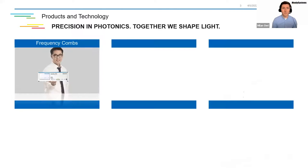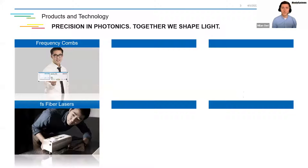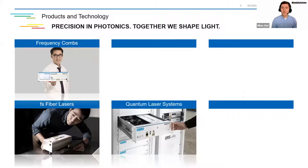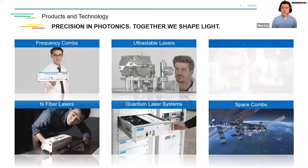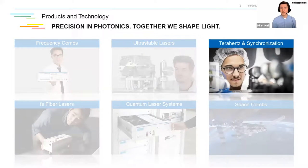Based on these important fundamentals, Menlo Systems has expanded its product portfolio by several more products. Every single product relies on our patented femtosecond fiber laser technology. Apart from the frequency combs, we offer femtosecond fiber lasers, quantum laser systems based on frequency combs, ultra-stable lasers, and combs that fly into space. But today's session is dedicated to the field of synchronization and terahertz systems.